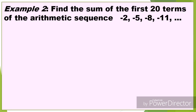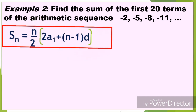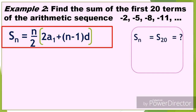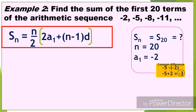Example number 2: Find the sum of the first 20 terms of the arithmetic sequence negative 2, negative 5, negative 8, negative 11. S of n is S of 20, and the number of terms is 20. A sub 1 is negative 2. To find the common difference, we subtract: negative 5 minus negative 2 gives us negative 5 plus 2, which equals negative 3. So the common difference is negative 3.